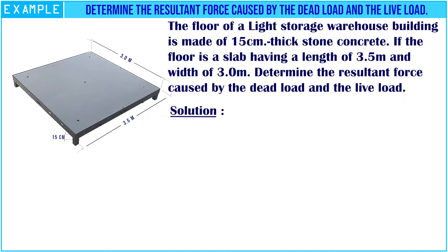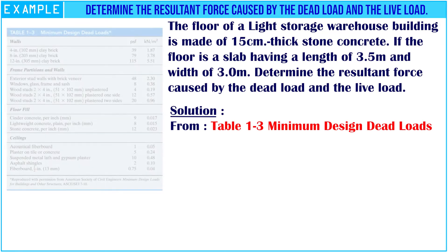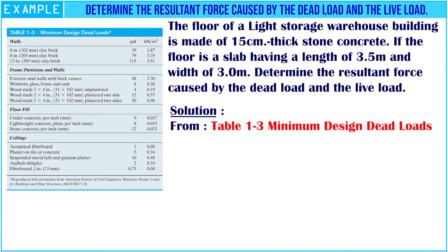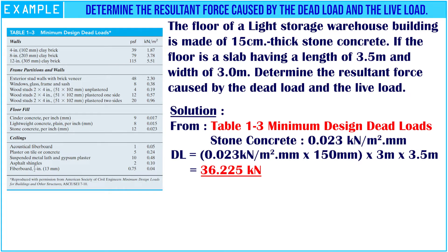Looking at Table 1.3 about minimum design dead loads, we see the stone concrete is 0.023 kN per square meter. We multiply the minimum design dead load of stone concrete by the length, width, and thickness of the slab. The answer for the dead load of the slab is 36.225 kN.